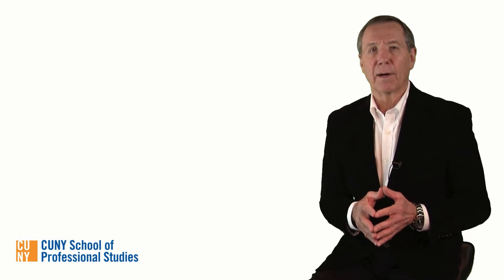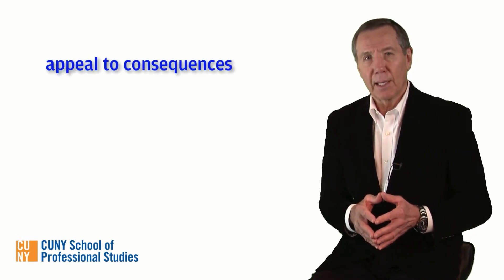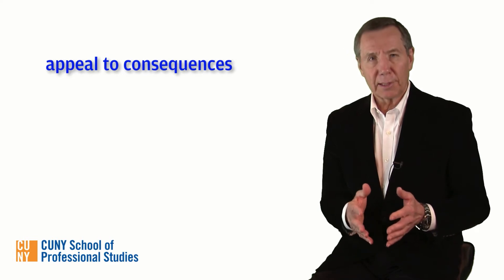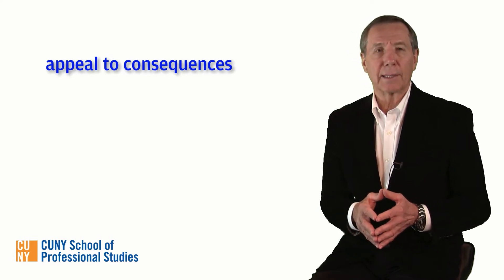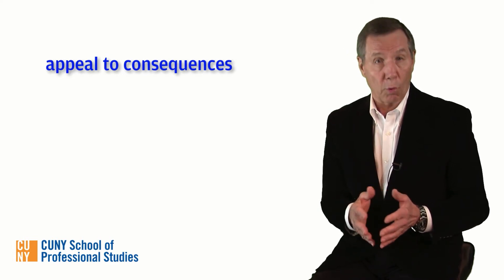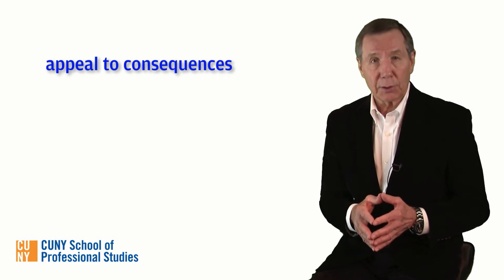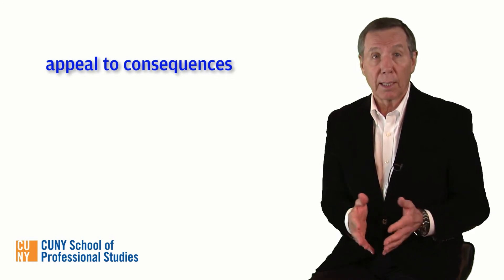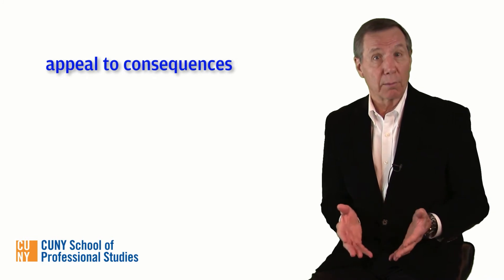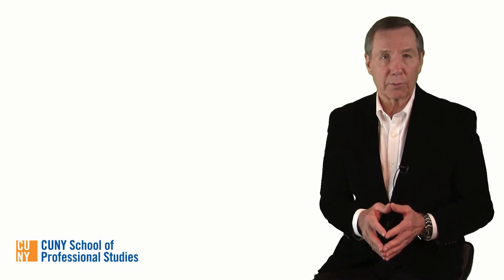We'll conclude this unit with a fallacy of appeal to consequences. This is an argument that fallaciously concludes an idea or proposition is true or false because the consequences of it being true or false are undesirable or desirable. The desirability or undesirability of the consequences is not related to the truth or falsity of the argument's conclusion or the cogency of its inference.